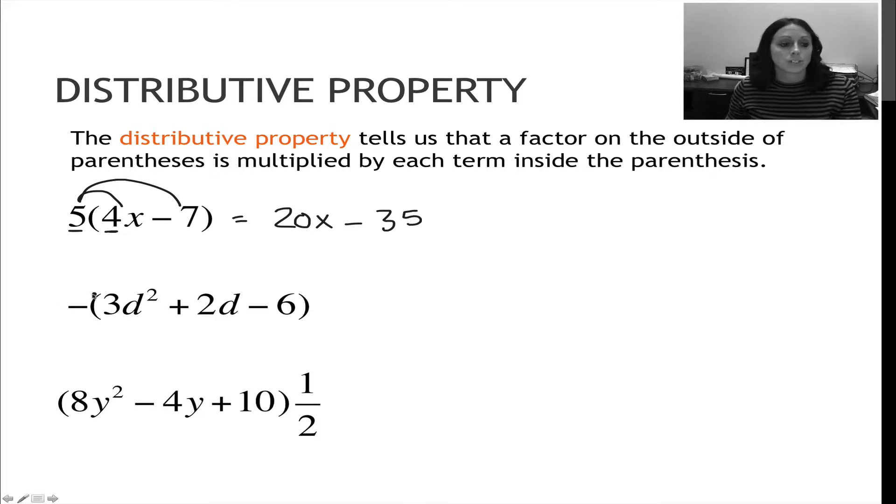For my second question here, I've got a negative 1 on the outside, so a minus. It's okay to think of that as a negative 1. And negative 1 is essentially just going to change all of the signs because multiplying by 1 doesn't change your value.